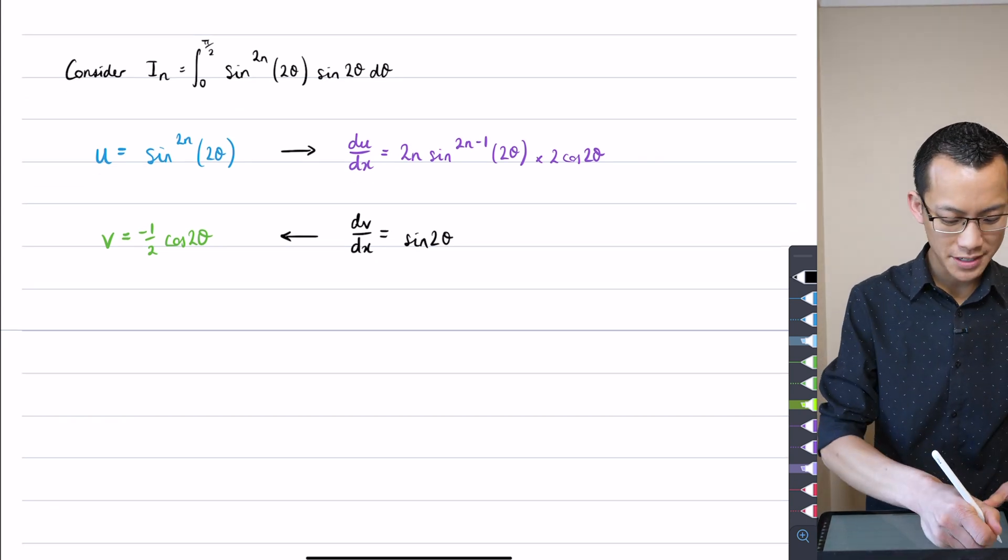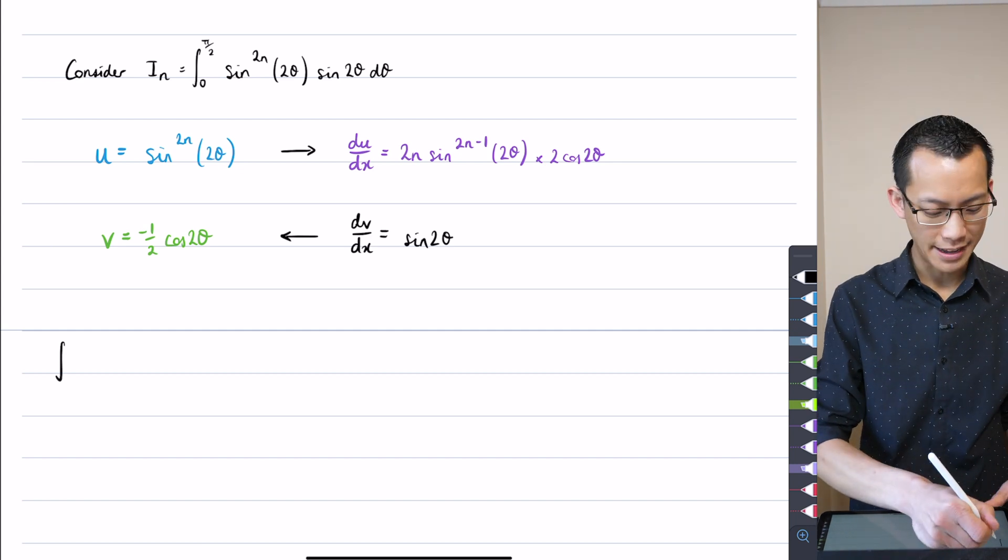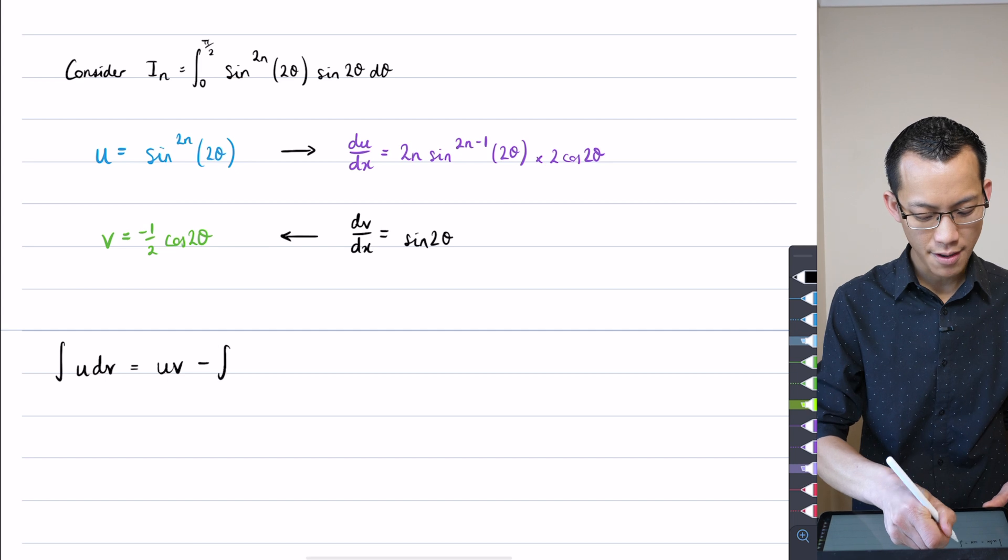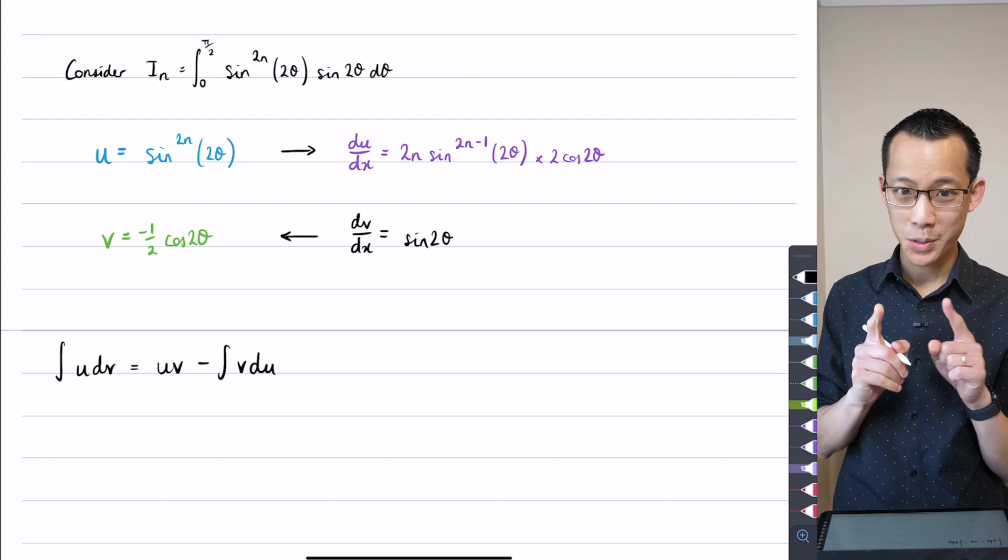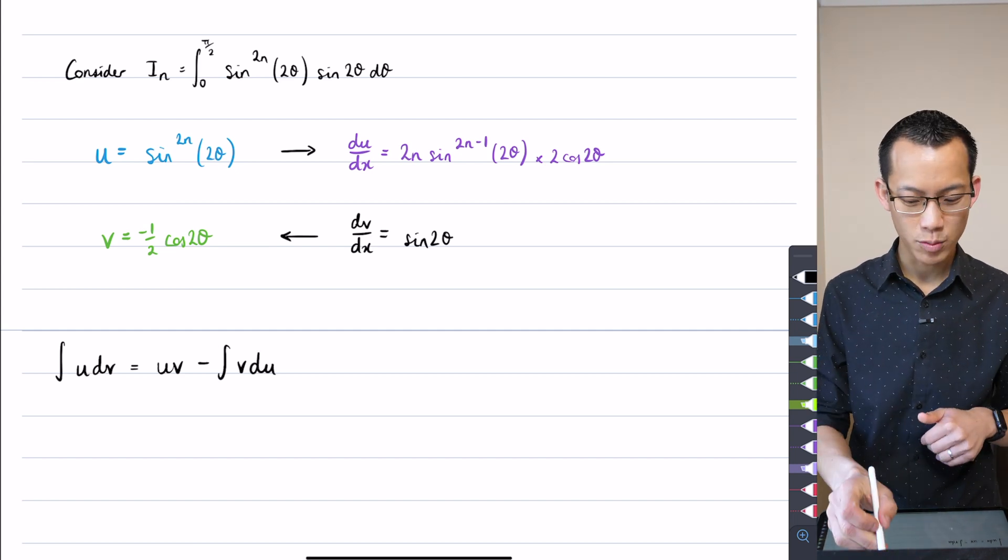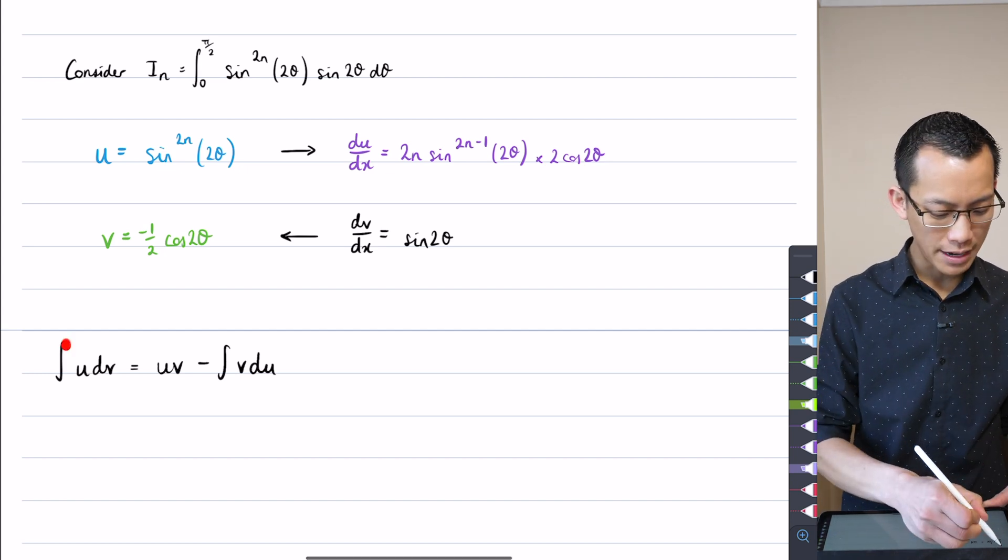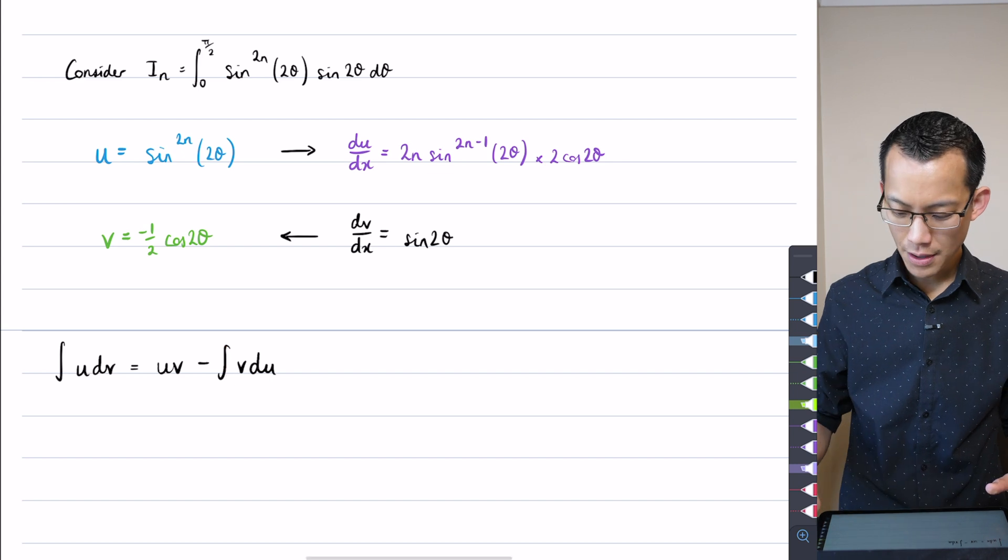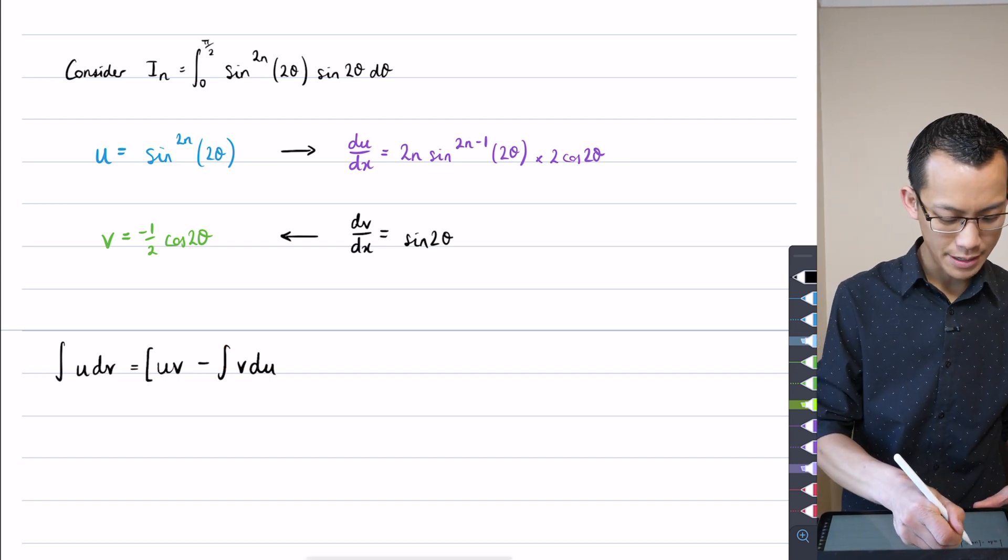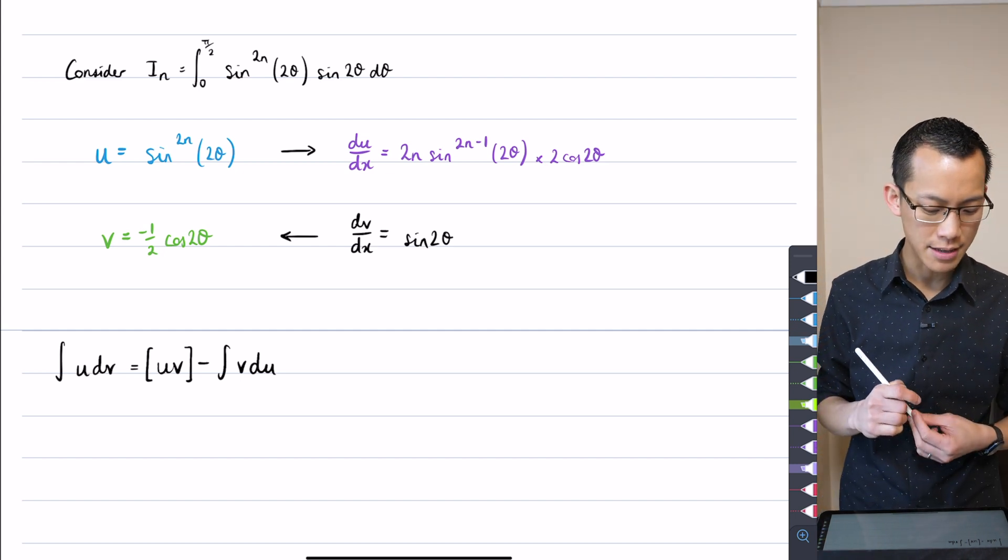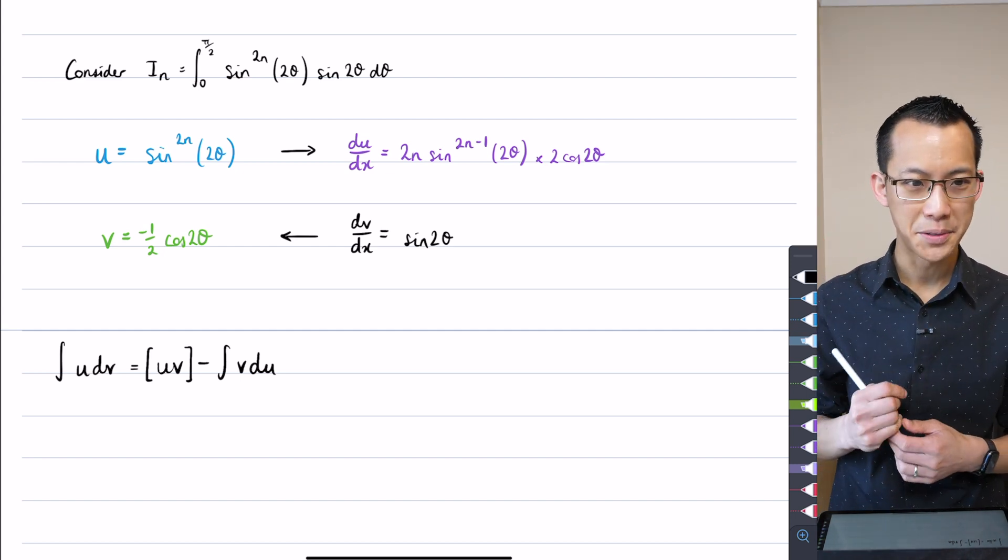Alright, so from there let's remember what does integration by parts actually look like? It's the integral of UDV which is equal to UV minus VDU. But we also need to recall in this case I_N is defined to be a definite integral, not an indefinite integral. So therefore we're going to have our boundaries here and here, and also we're going to have our boundaries here on this—we're going to have to evaluate what this UV is equal to at our upper and lower bounds.